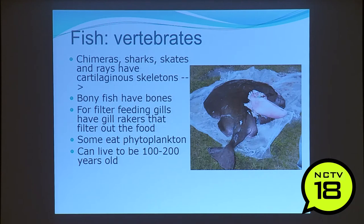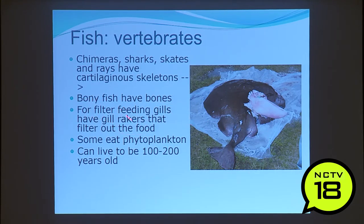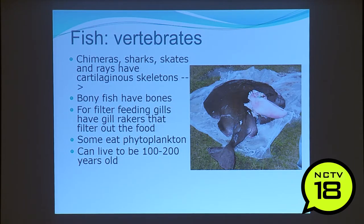Here's a torpedo ray dissected at the field station about eight or nine years ago. Chimeras, sharks, skates, and rays have cartilaginous skeletons — I had to figure that out the hard way by dissecting and finding no bones. For filter feeding, they have gill rakers. Some fish can live to be 100 to 200 years old. This 120-pound female torpedo ray had an egg sac. They generate electricity — they used to be called cramp fish, and Romans would use them to treat sick people by making them get shocked.